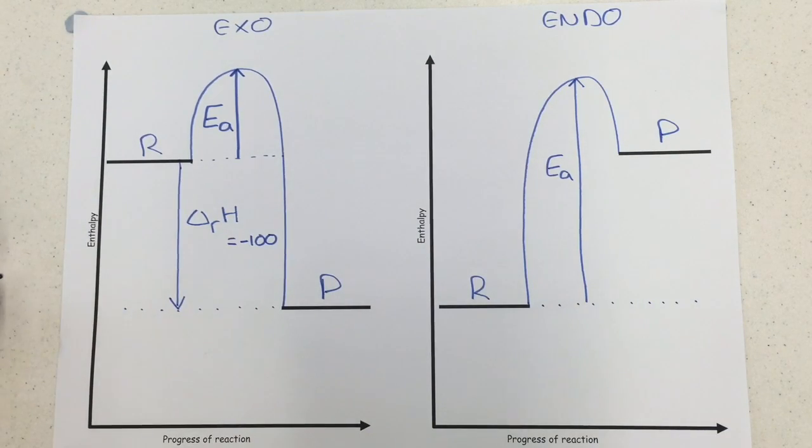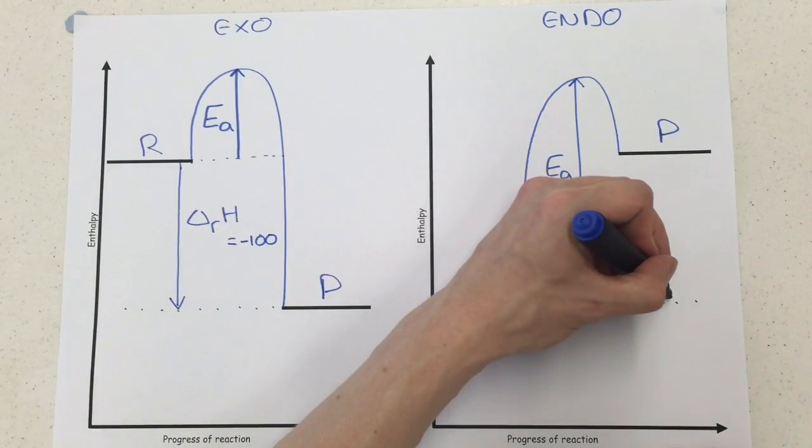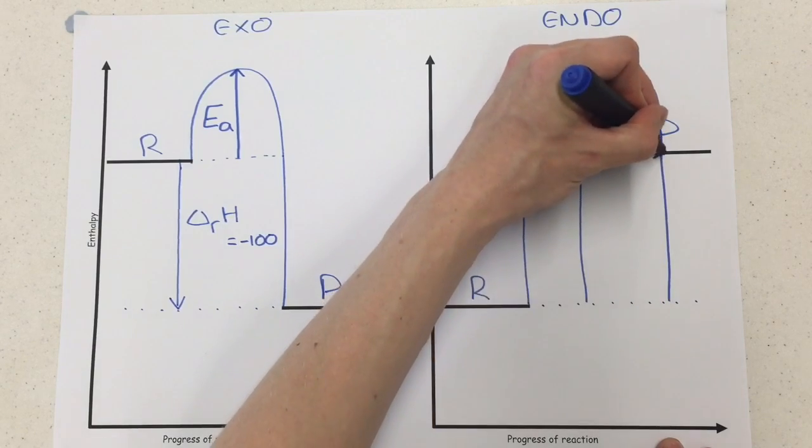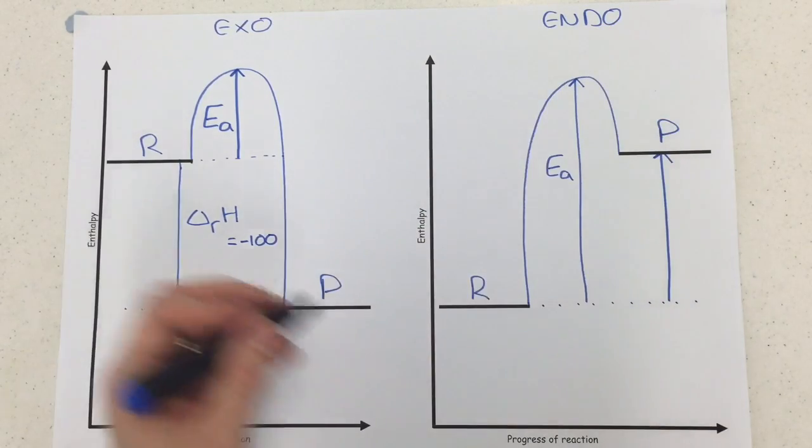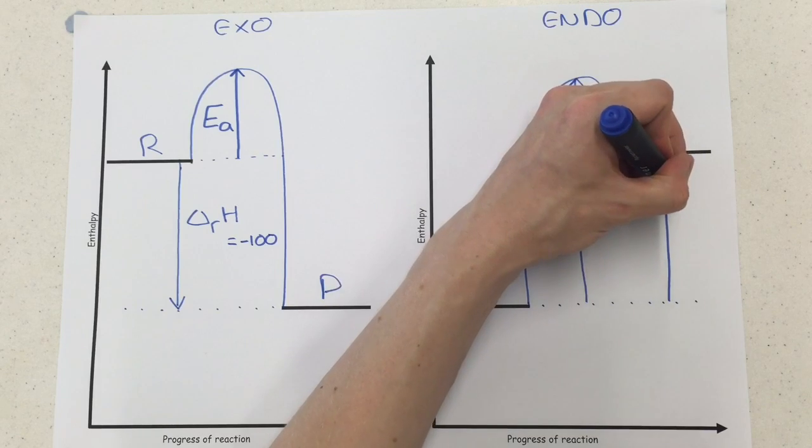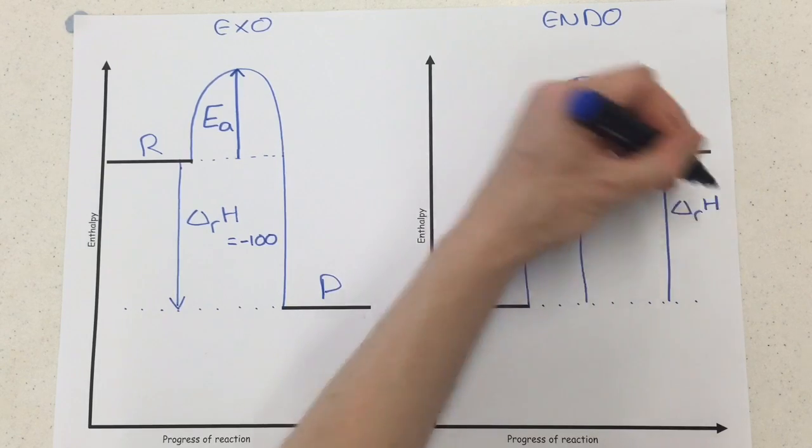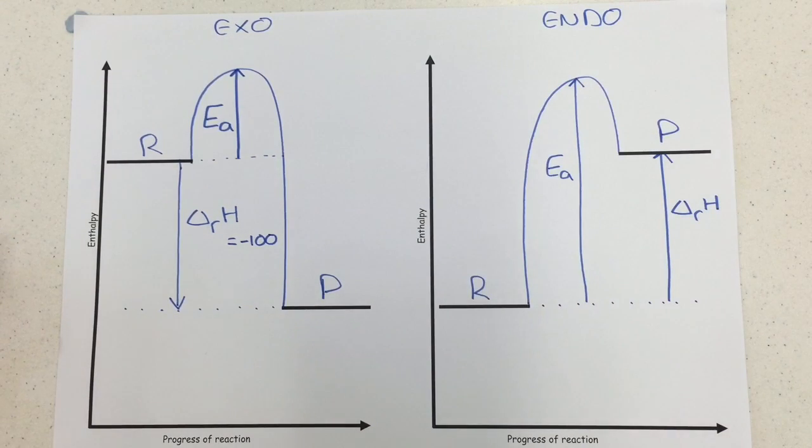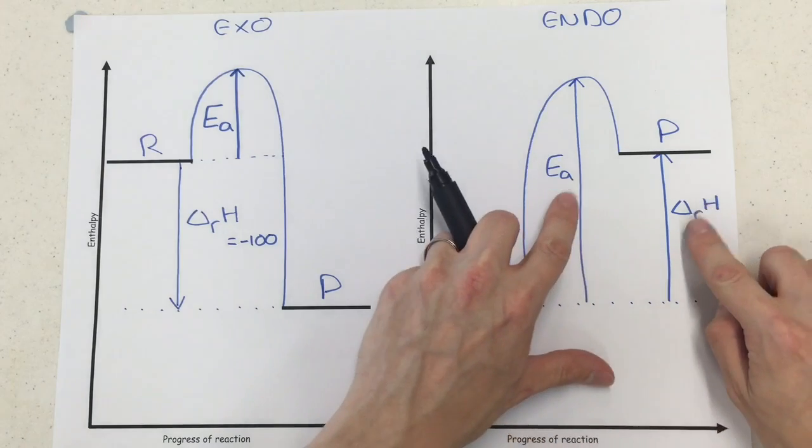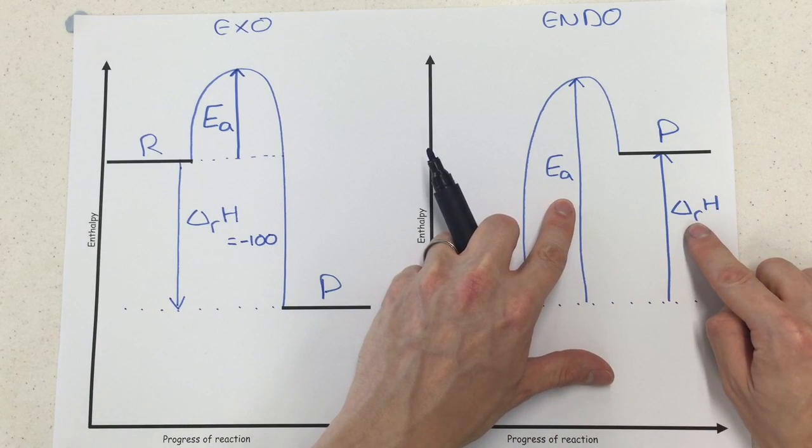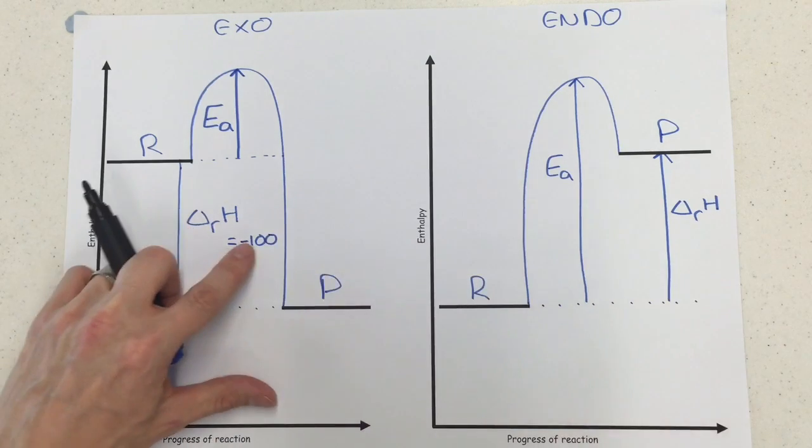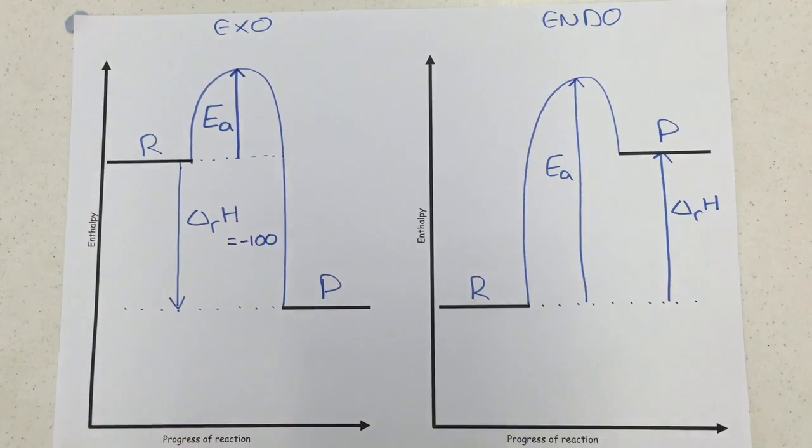Now the actual enthalpy change of the reaction would be another upwards arrow from the reactants to the products line, which is the same in both of them as well, and that would be the delta Rh. It always looks like this one is a little bit wrong but trust me this is exactly how it's meant to be drawn, and notice these are both two upwards pointing arrows because they're both endothermic numbers, whereas here we have an exothermic number so this was a downwards pointing arrow.